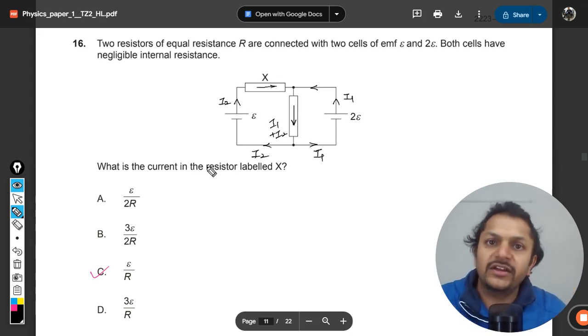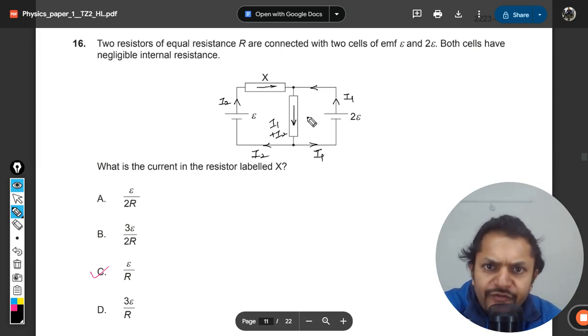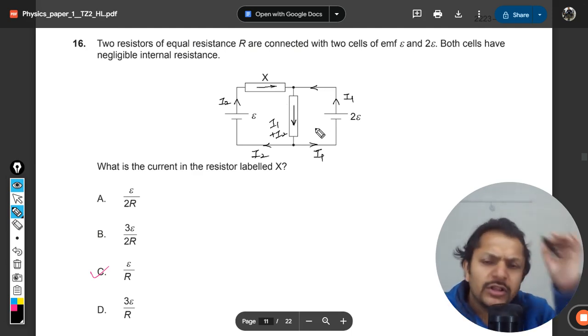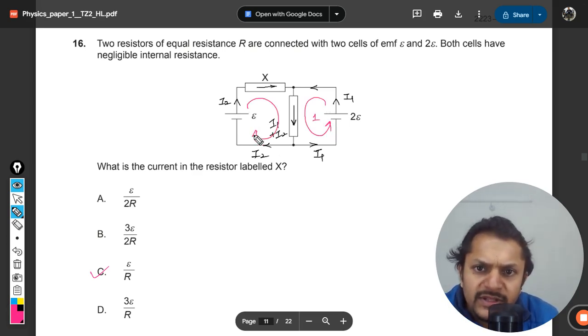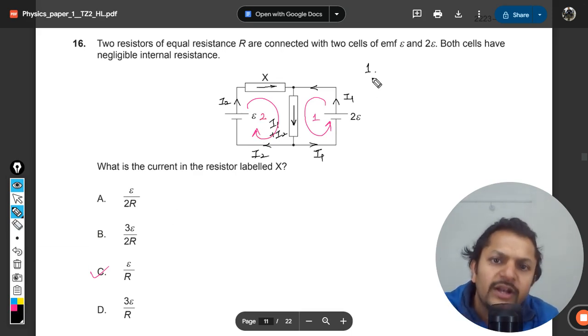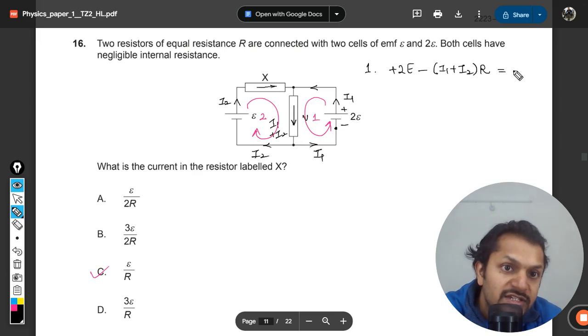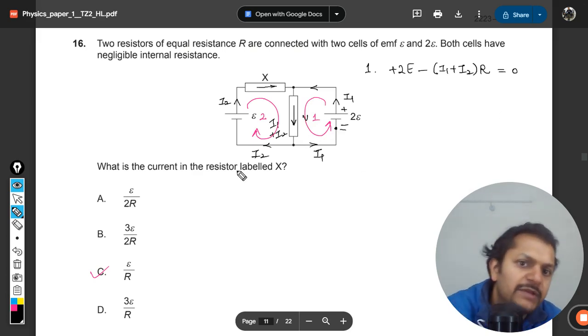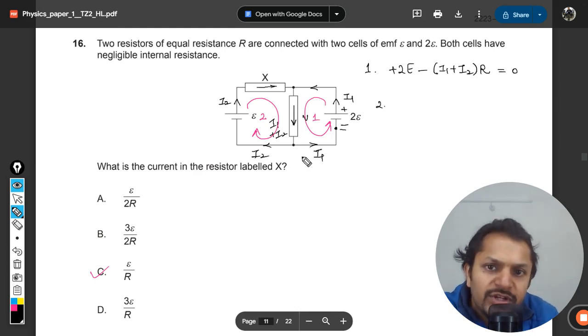We can create as many loops as we want and solve the equations. This is loop number one, this is loop number two. For loop one, the positive terminal is here, negative terminal is here. We start from this, so negative terminal comes first, giving us plus 2e. Then here this is r but the current is i1 plus i2, so minus (i1 + i2)r because the loop is going downward and current is also going downward. This equals zero.